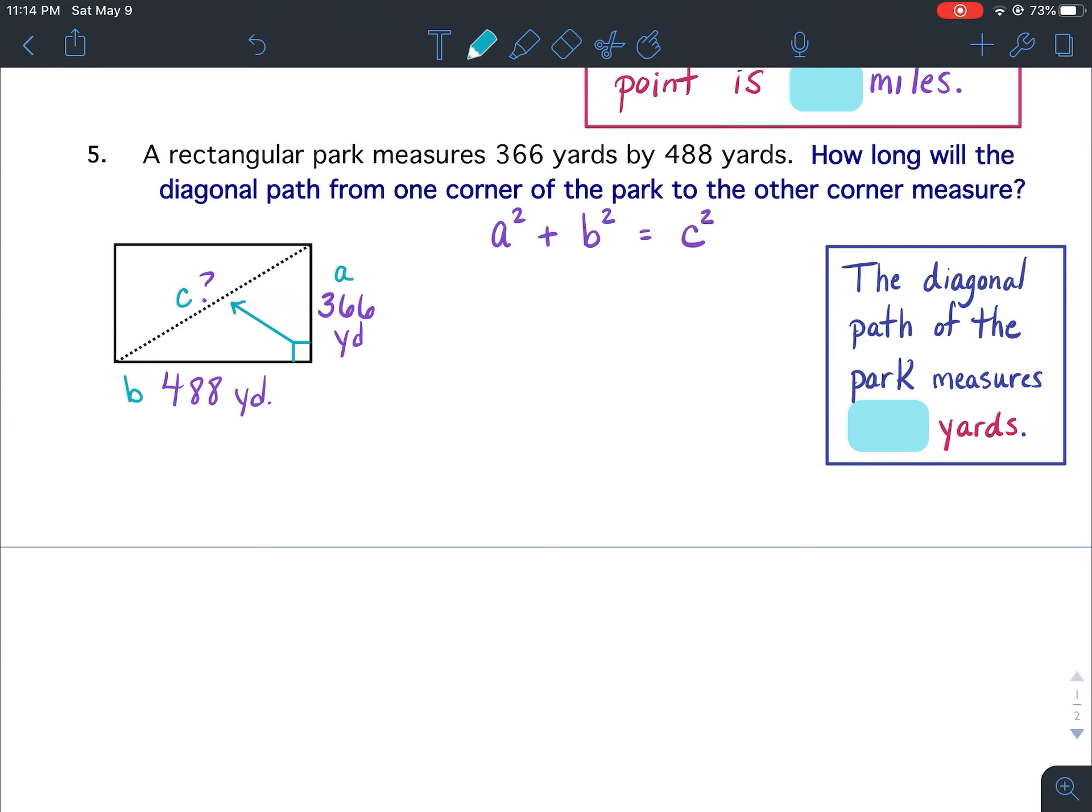You're going to finish number five completely on your own and then don't forget the final answer. It will be the diagonal path of the park measures and that box right there is where you're going to put the number and then yards. Okay so pause your video get all that written down.